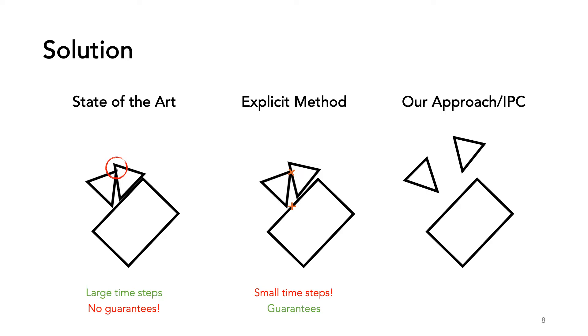Instead, we propose a method based on recent work in deformables, Incremental Potential Contact, IPC. Similar to state-of-the-art methods, we step all bodies together but disallow any intersections through the use of a barrier potential and continuous collision detection. Every sub-step is intersection-free, so the end result will be intersection-free. This allows us to take large time steps and provide intersection-free guarantees.